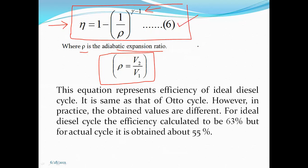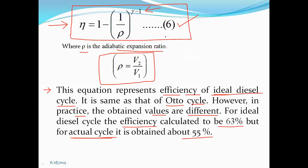This equation represents the efficiency of an ideal diesel cycle — it is not practical. The form is the same as that of the Otto cycle. However, in practice the obtained values are different. For the ideal diesel cycle, the efficiency is calculated to be 63%, but for the actual diesel engine it is about 55%. This difference between ideal and actual diesel engine efficiency is important to remember.